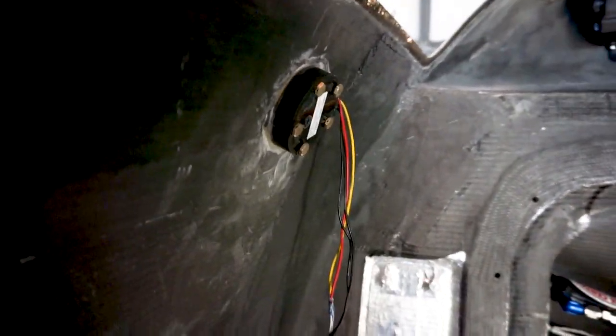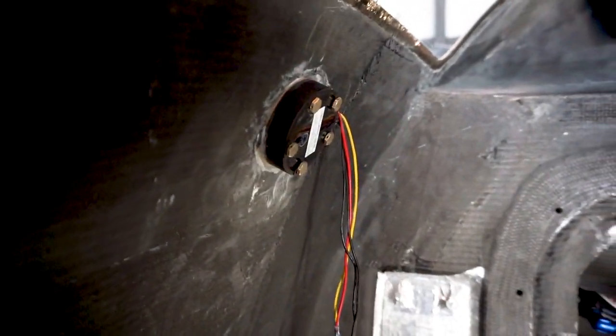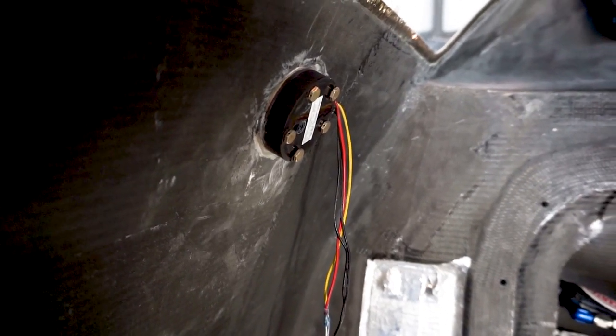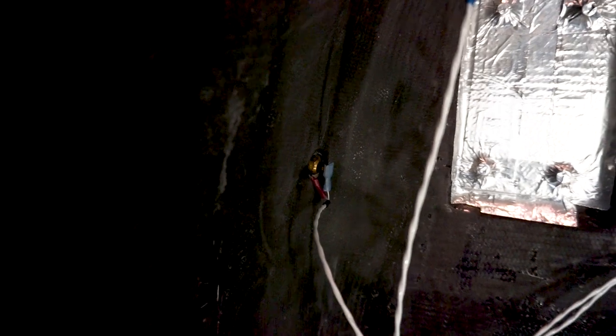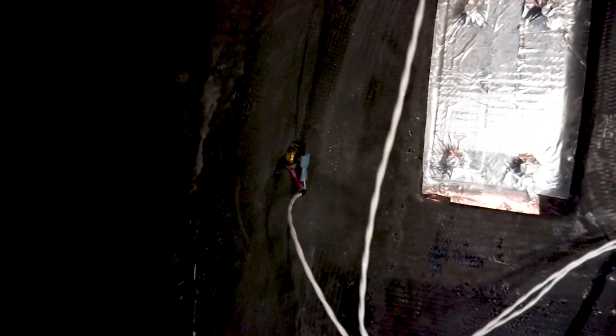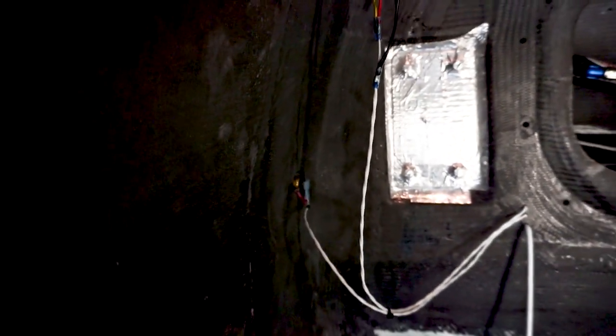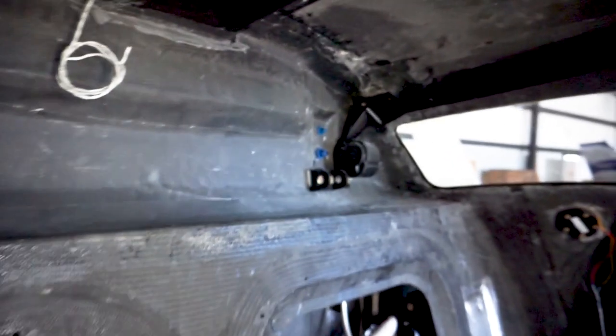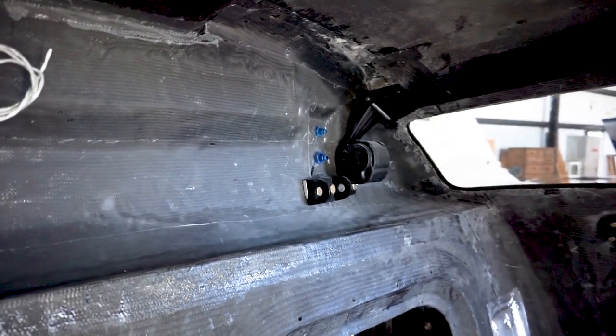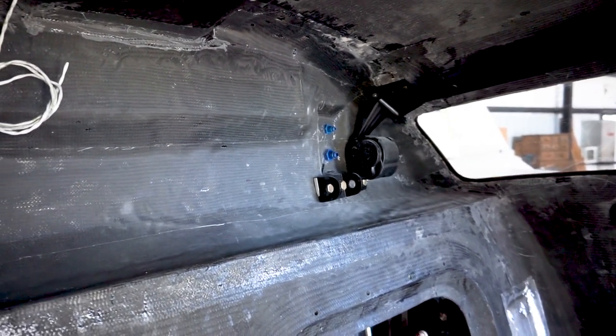Over here you've got the sender unit for the fuel gauge or fuel level in the strake tank. Down there is a temperature sensor for the fuel, so we know if the fuel is getting too cold and we need to turn on the heater. That's something we can automate later on.